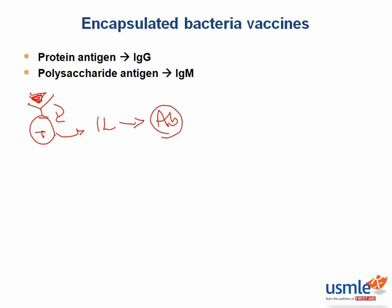When it comes to encapsulated bacteria with polysaccharide antigens, however, the polysaccharide antigen — which we'll represent with a circle — can only activate the T-cell to cause IgM production.